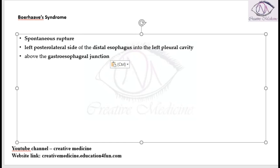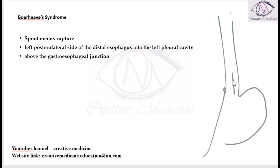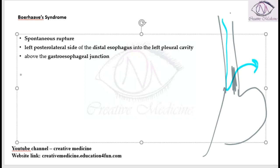Sometimes it can also occur above the gastroesophageal junction. If this is the esophagus and this is the stomach, here in the left posterior lateral side a rupture occurs so that the contents present in the esophagus will go into the left pleural cavity.